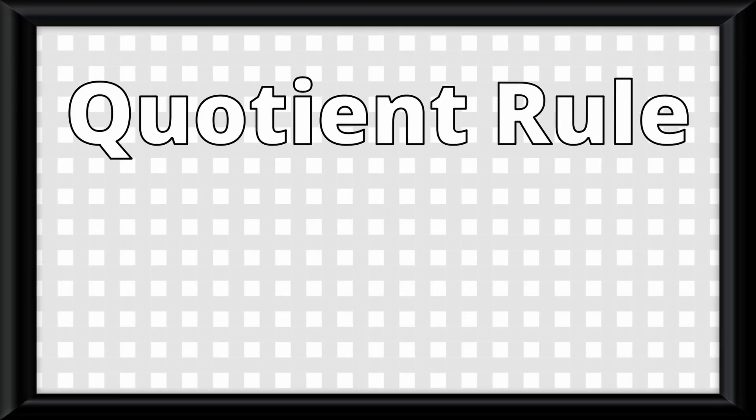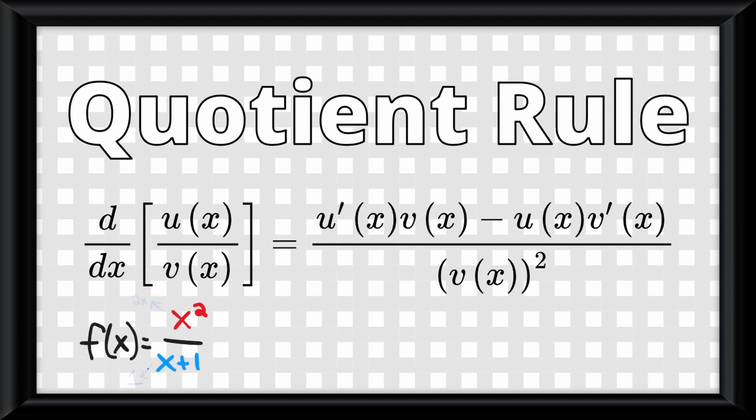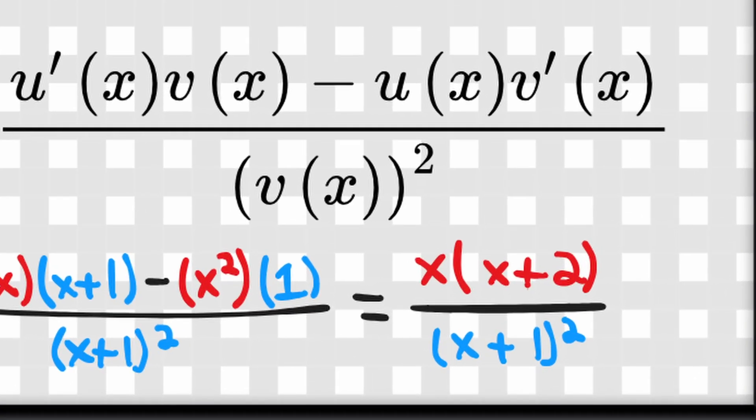And finally, the quotient rule states that for a function u of x divided by v of x, the derivative is the product rule with a minus instead of a plus over v of x squared. So for this function, we find each its respective derivatives, plug it into the formula, simplify, and we get our derivative function.